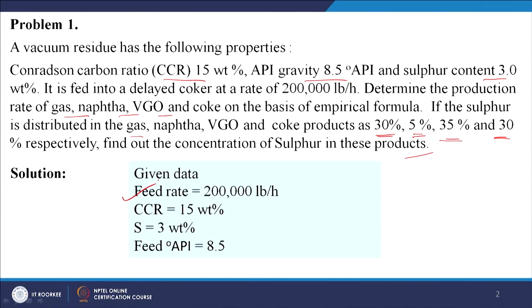The data given: feed rate 2 lakhs pound per hour, CCR is 15%, sulfur is 3% in the feed, and API is 8.5 for the feed. We will use the empirical relationship to determine different products, as discussed in our previous classes — using empirical formulas we can predict the product distribution for a delayed coking process.